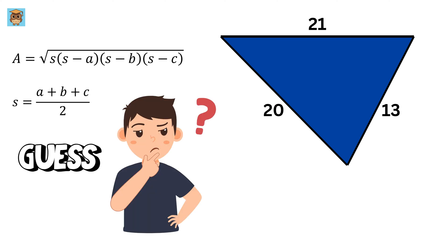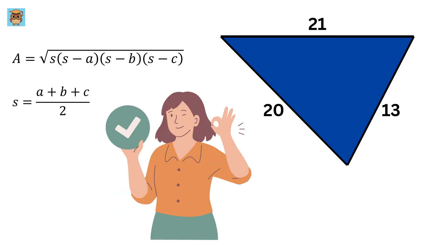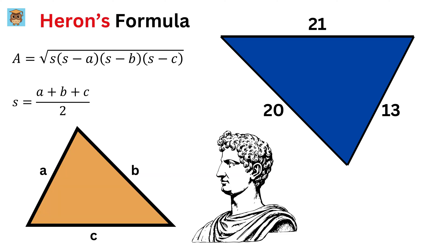Can you guess whose formula is this? Yes, you are right. It is none other than Heron's formula to find the area of a triangle whose three sides we know.